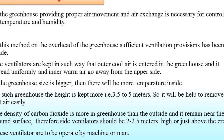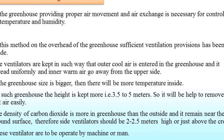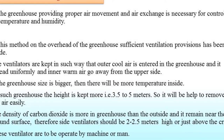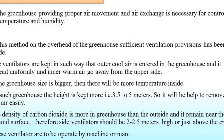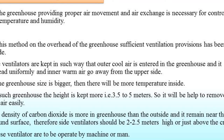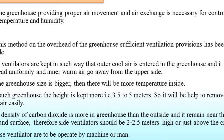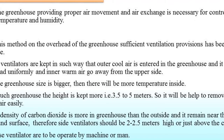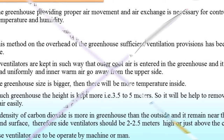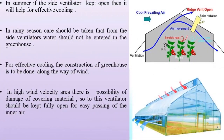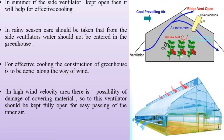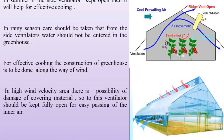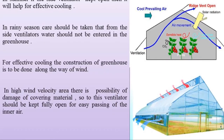The density of carbon dioxide is higher in greenhouses than outside, and due to its high density it remains near the ground surface. Therefore, the side ventilator should be 2 to 2.5 meters in height, or sometimes located just above the height of the crops. These ventilators are operated by machine or by man, and work efficiently in summer season. In summer season, the side ventilators are kept open, which helps to reduce temperature effectively.